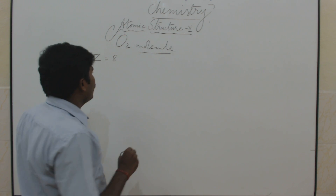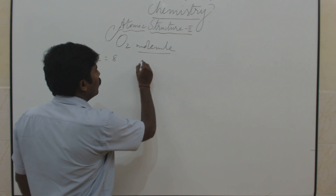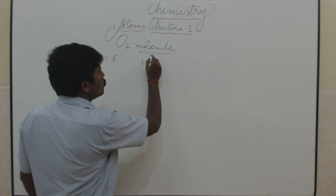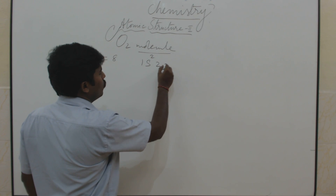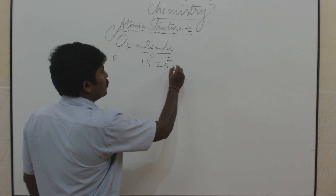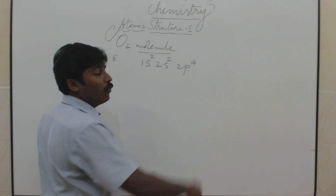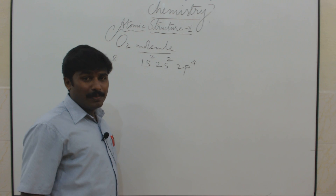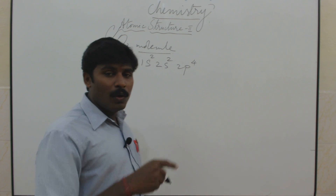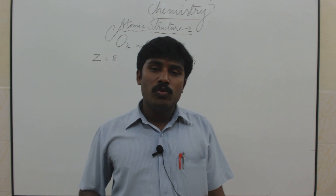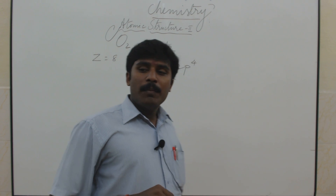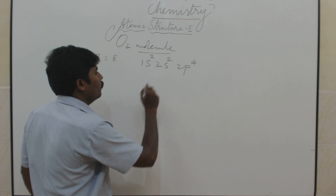The electronic configuration of oxygen is 1s2, 2s2, 2p4. In the previous case (nitrogen) it was 2p3, but here it is 2p4.